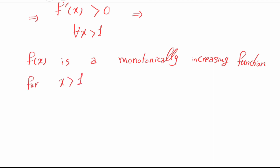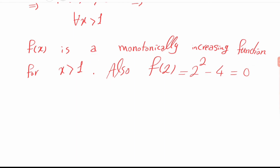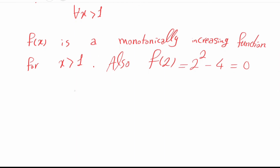We proved that if x is a solution for this equation, then x is greater than 1. We also proved that f of x is monotonically increasing on all x greater than 1, and therefore there exists at most one solution for f of x equals 0. Since f of 2 equals 2 to the 2 minus 4 equals 0, we conclude that the only solution for this equation is x equals 2.